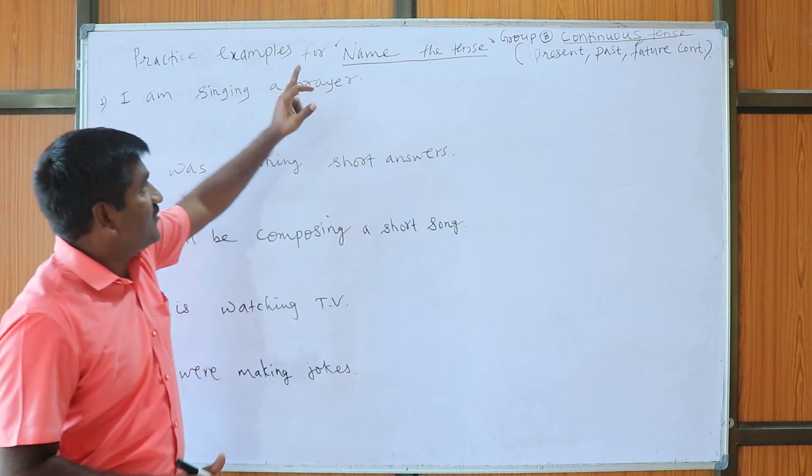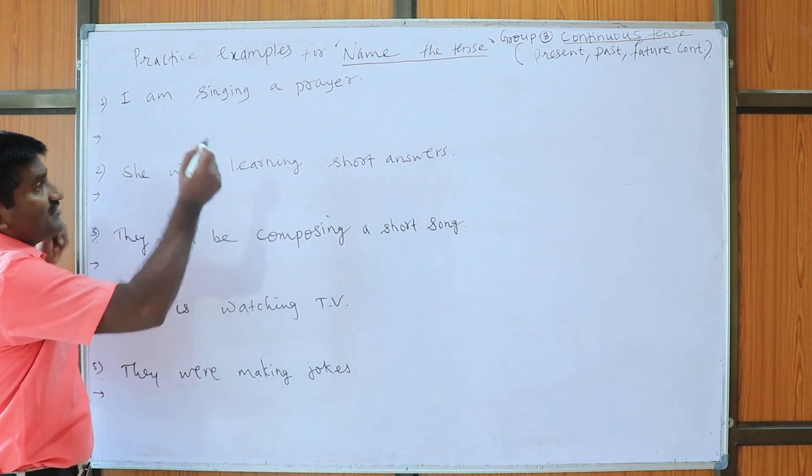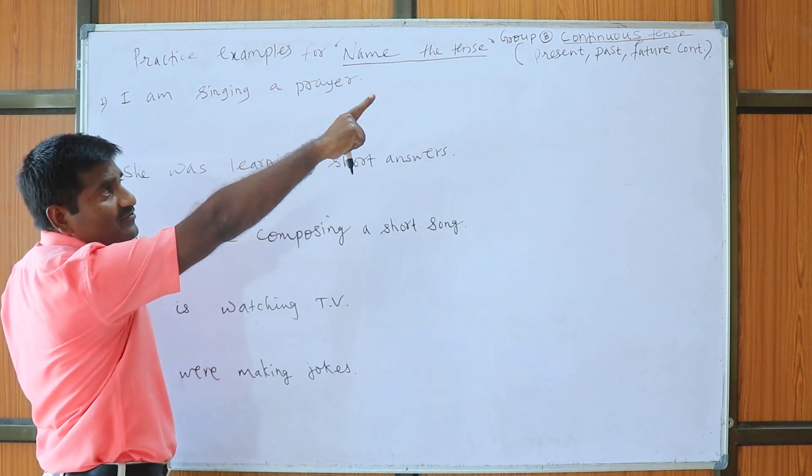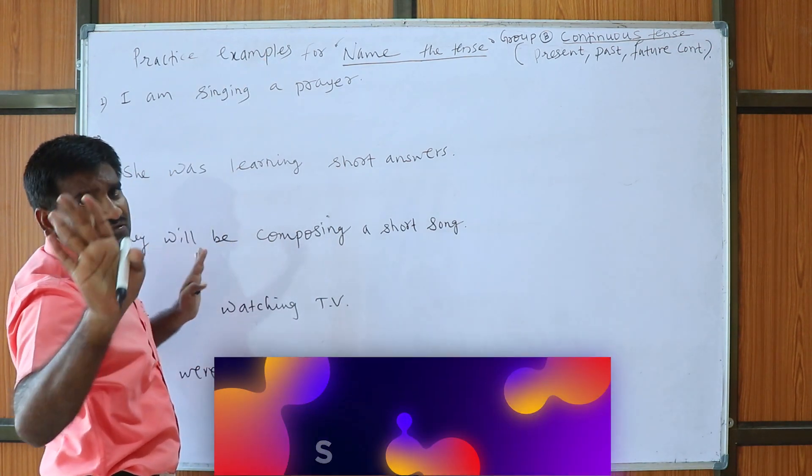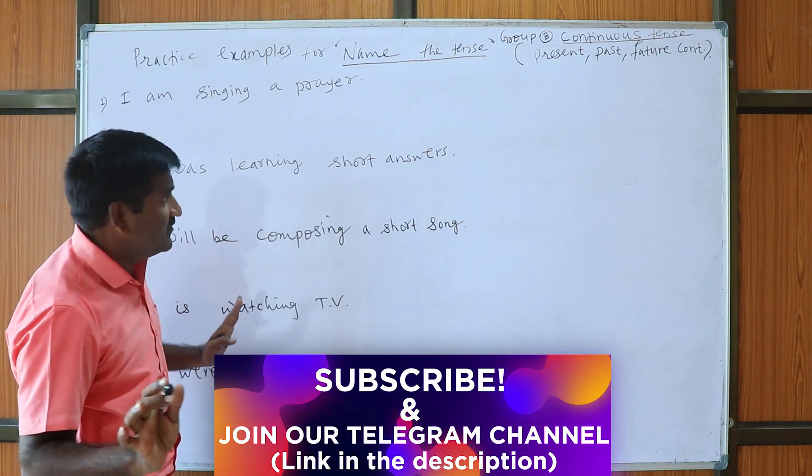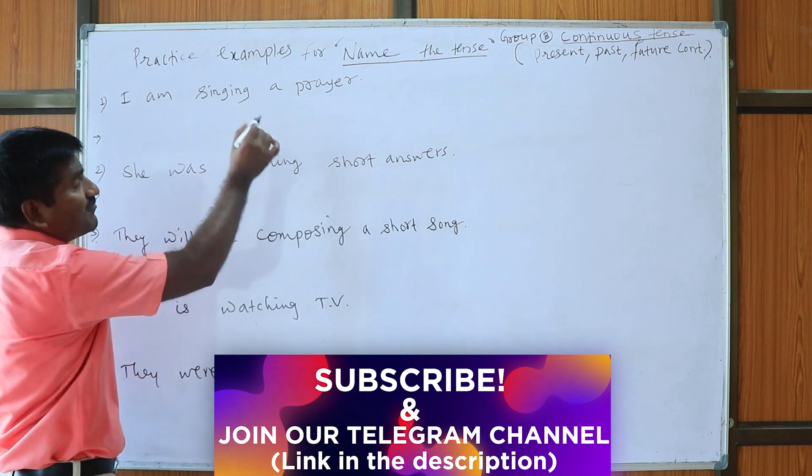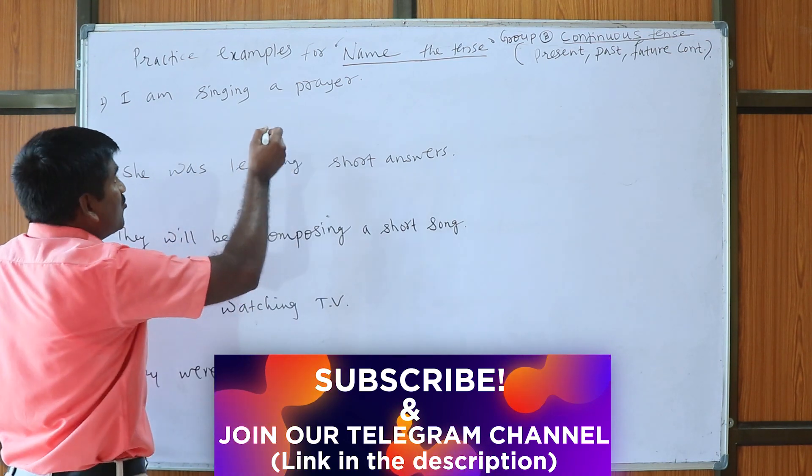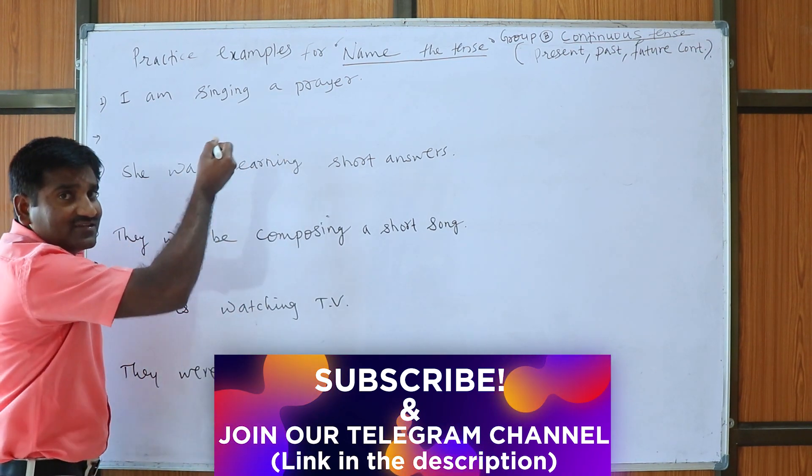Practice examples for name the tense. So we have first examples of group B that is continuous tense, which we have present, past or future. Practice here. The first example is I am singing a prayer. So which tense it is, that is the question.